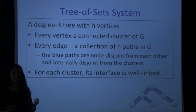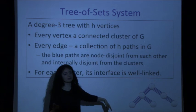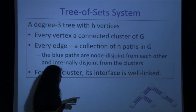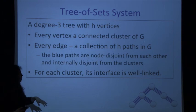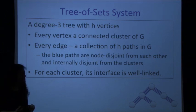We start with a tree with maximum vertex degree at most 3. Every vertex of this tree is a cluster — a connected subgraph of the graph — and all clusters are disjoint. Every edge of this tree corresponds to a bundle of h disjoint paths connecting those two clusters, and again all blue paths must be disjoint from each other and internally disjoint from the clusters.